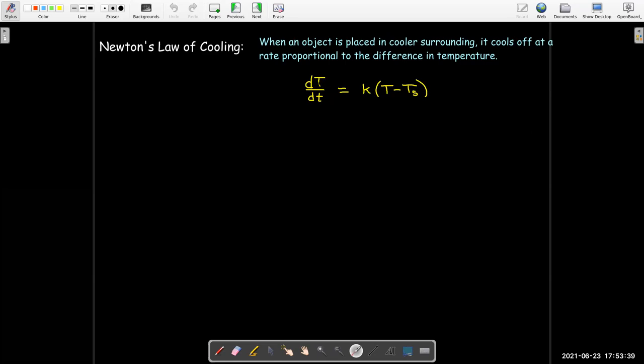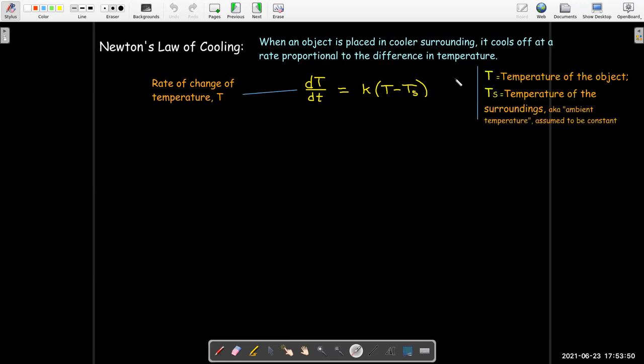So the way that we can write that, if capital T represents temperature, then the rate of change in the temperature is going to be proportional to the difference between the temperature of the object and the temperature of the surroundings. That's also known as the ambient temperature. And in this model, we assume that the surrounding temperature essentially remains constant throughout the cooling period.